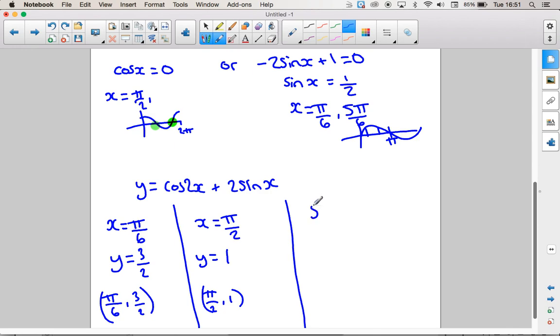And my final one is when x is 5 pi over 6, which comes out at 3 over 2 as well. So 5 pi over 6, 3 over 2. So those are our 3 final solutions.